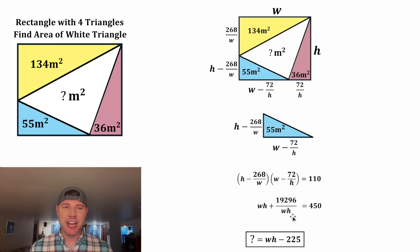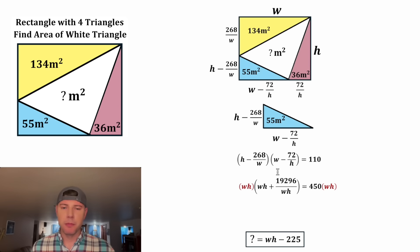First, let's get the WH out of the denominator. Let's multiply both sides of both equations by WH. On the left-hand side, this WH will distribute to both of these. For this one, it gives us WH squared. And WH times 19,296 over WH is just 19,296 because the WHs will cancel each other out.